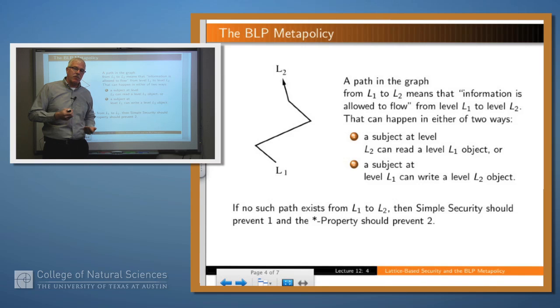Remember, pulling the information up or reading is allowed by simple security. Pushing it up is allowed by the star property. And if L2 didn't dominate L1, then it shouldn't be possible for there to be information flow from L1 up to L2.